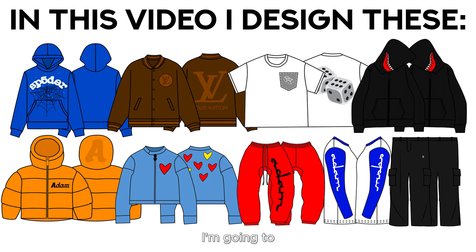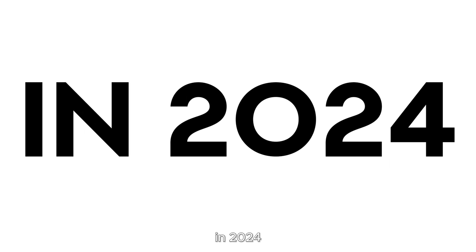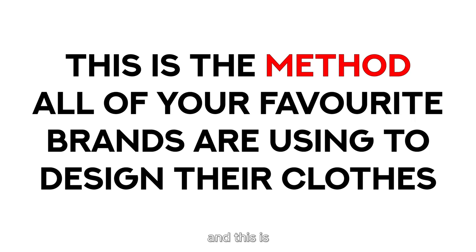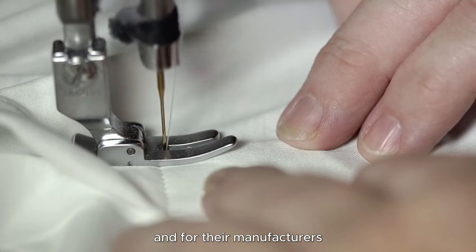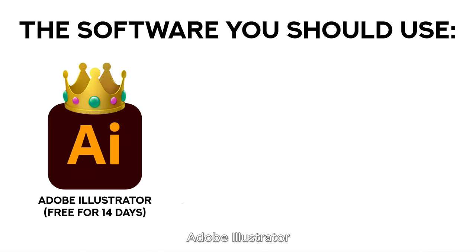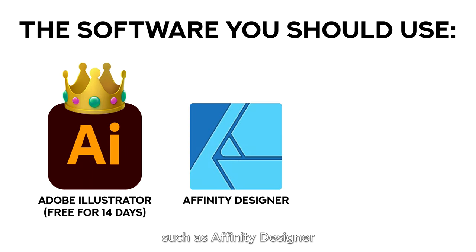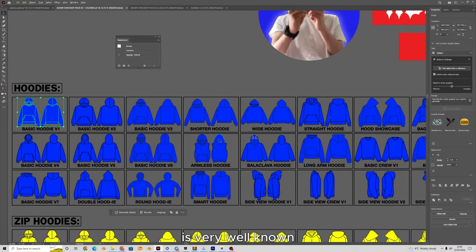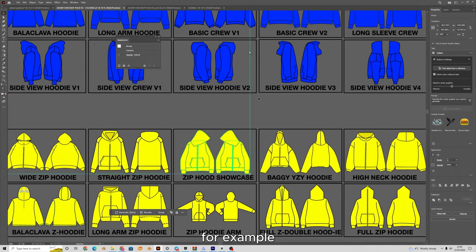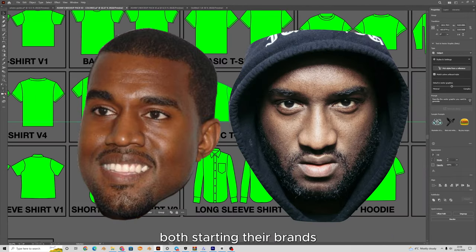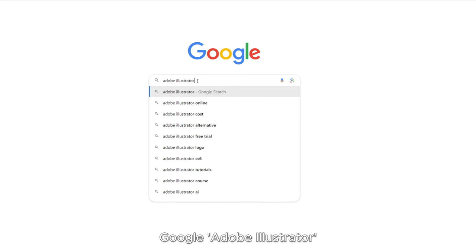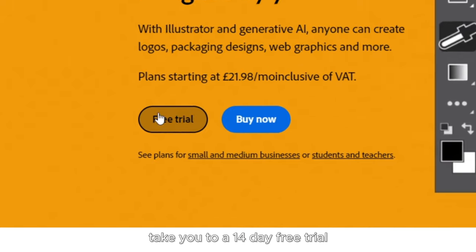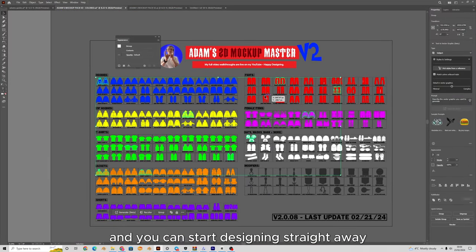Hello, it's Adam from Adam's Mockups. In this video I'm going to show you step by step how to design mockups for your clothing brand as a beginner in 2024. I've been designing clothes for over two years for brands all over the world, and this is the method that all of your favorite brands are using. The software you want to use is called Adobe Illustrator. There are other options such as Affinity Designer or a free online website called Photopea, but Adobe Illustrator is used by all of the largest brands — Kanye West and Virgil Abloh both talk about using it. If you just Google Adobe Illustrator, the top result will take you to a 14-day free trial where you can sign up, download, and start designing straight away.